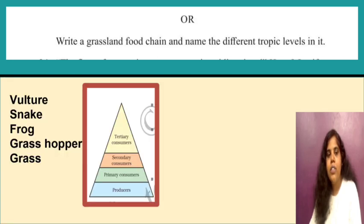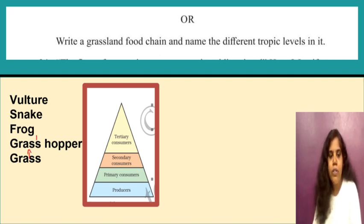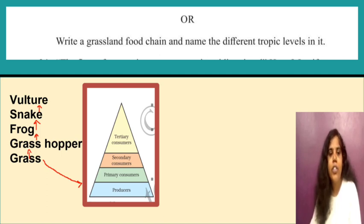Write a grassland food chain and name the different trophic levels. The food chain is: Grass → Grasshopper → Frog → Snake → Vulture. Grass is the producer at trophic level 1. Grasshopper is the primary consumer, frog is the secondary consumer, and snake is the tertiary consumer.